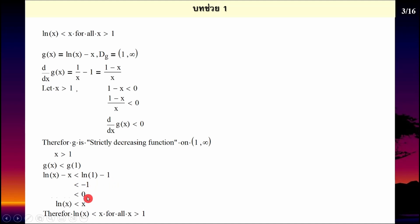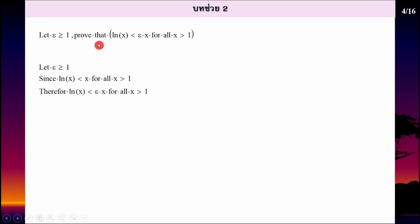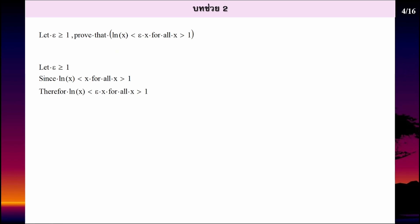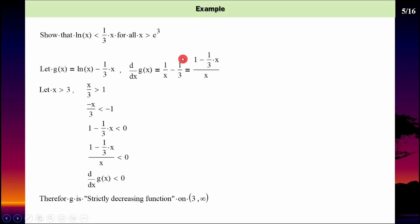นี่ก็เป็น −1 น้อยกว่า 0 ย้าย x มาด้านนี้ แล้วก็สรุปได้ว่า log x น้อยกว่า x ทุกค่า x มากกว่า 1 อันนี้เตรียมไว้อ้างอิง บทช่วยที่ 1 ก็ให้อ้างใช้เลยนะ ไม่ต้องพิสูจน์ ให้ epsilon มากกว่าหรือเท่ากับ 1 จงพิสูจน์ว่า log x น้อยกว่า epsilon·x ทุกค่า x มากกว่า 1 เนื่องจากบทช่วยที่ 1 log x น้อยกว่า x ก็ต้องน้อยกว่า epsilon·x ด้วย